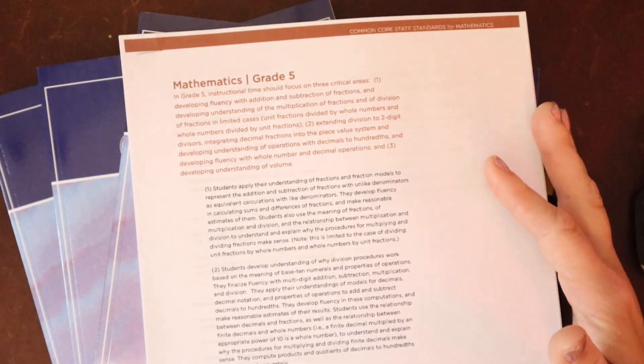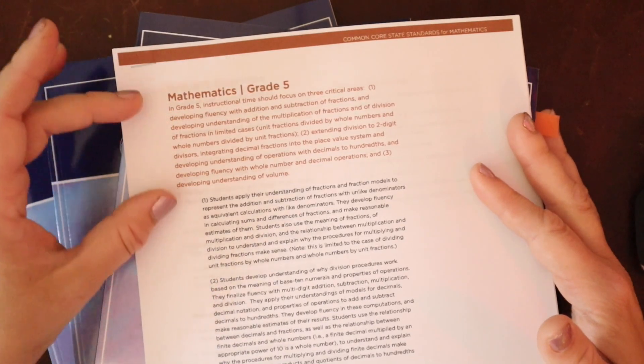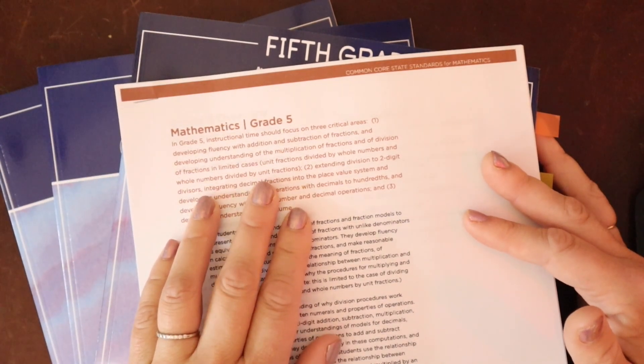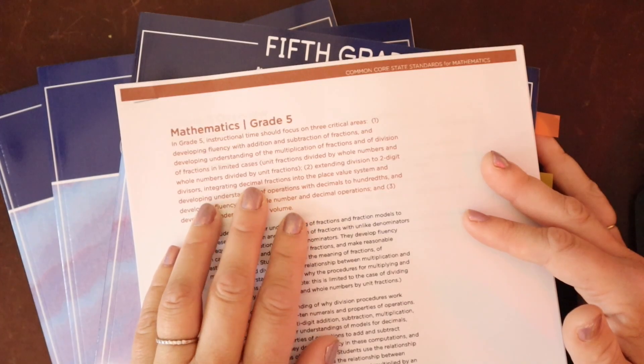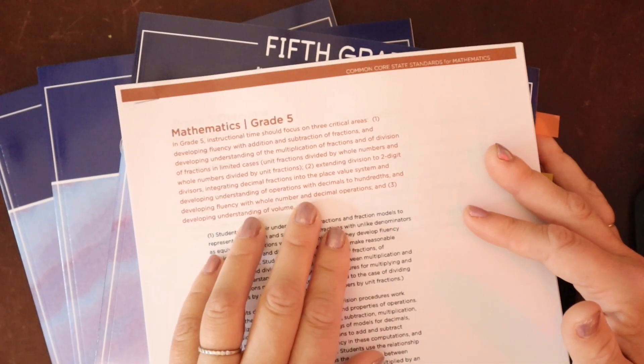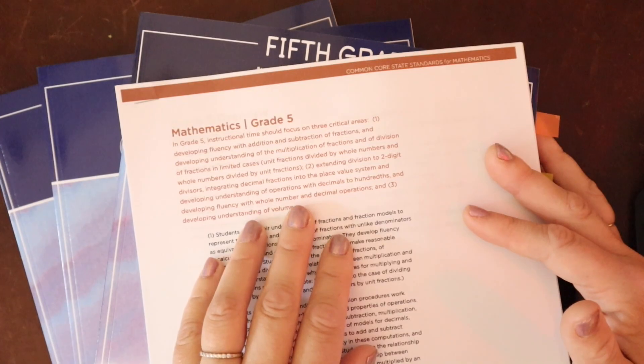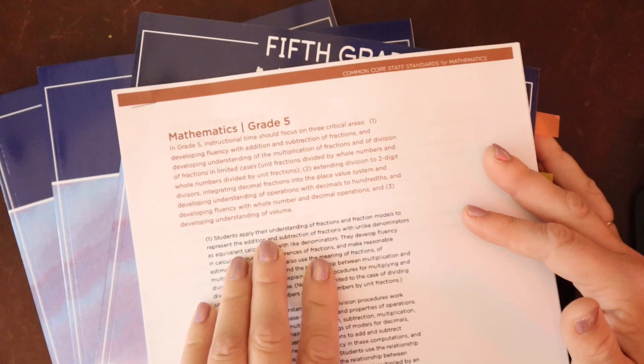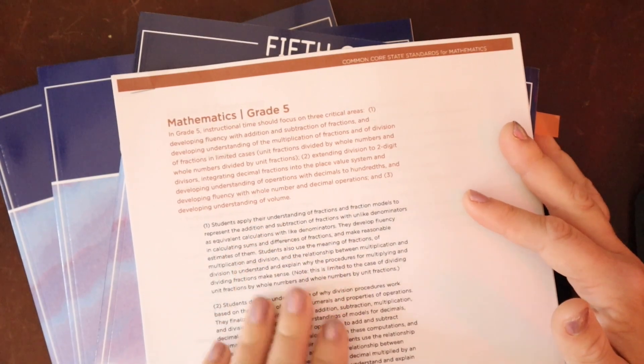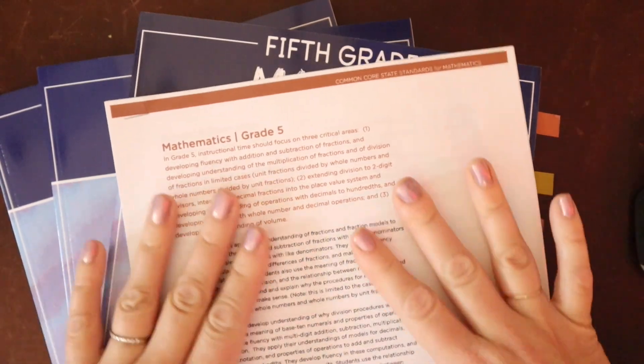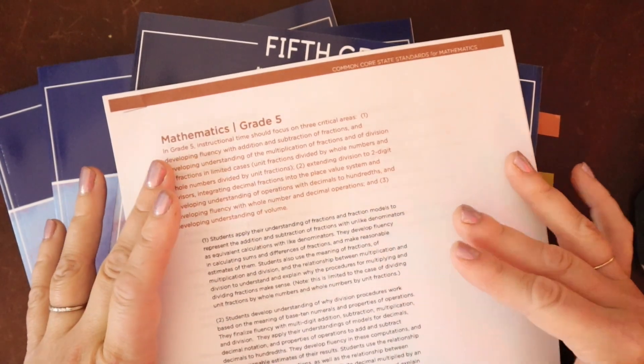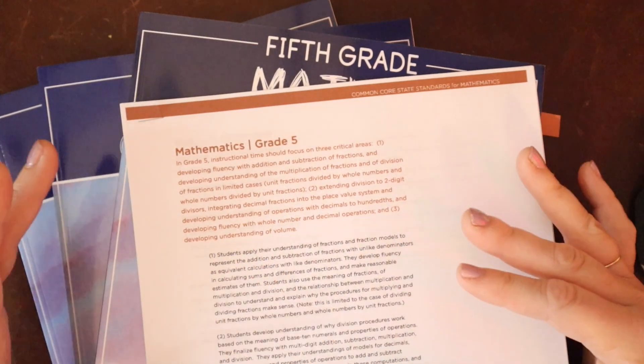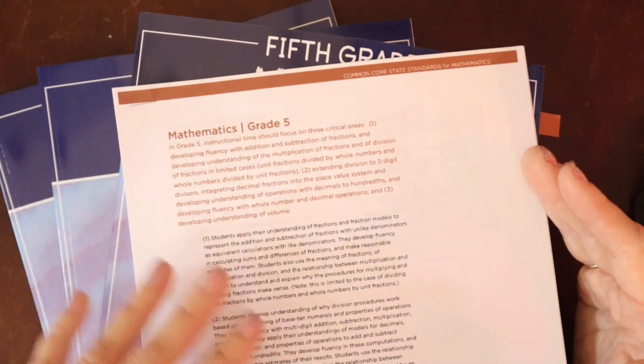So the way we read these is they have a mathematics grade 5 overview, and it's kind of looking at the three critical areas. Developing fluency with addition, subtraction of fractions, and developing understanding of the multiplication of fractions and division of fractions in limited cases. Extending division to two-digit divisors, integrating decimal fractions into the place value system, and developing understanding of operations with decimals to hundredths. Developing fluency with whole number and decimal operations, and developing understanding of volume. So what does that all mean? 5th grade math is a lot of fractions. We are looking at multiplying, adding, dividing fractions, comparing fractions, using decimals and fractions, and then we're also continuing geometry with exploring volume.